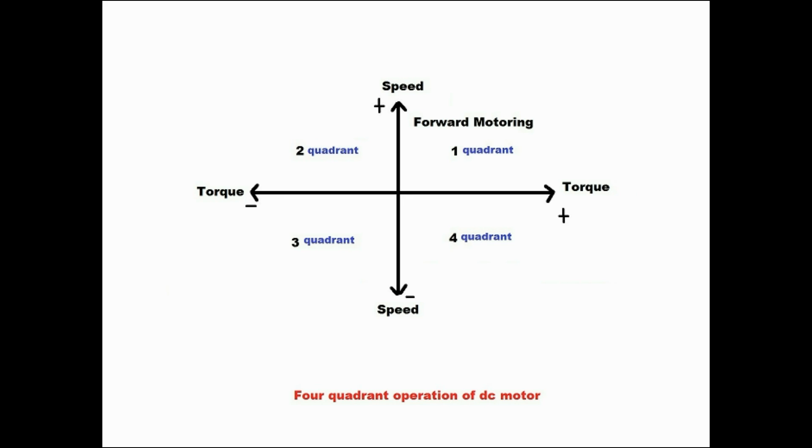First, forward motoring in first quadrant. In forward motoring, the terminal voltage is more than the back EMF, so the armature current flows and electrical power is converted to mechanical. The speed, torque, and power are positive.